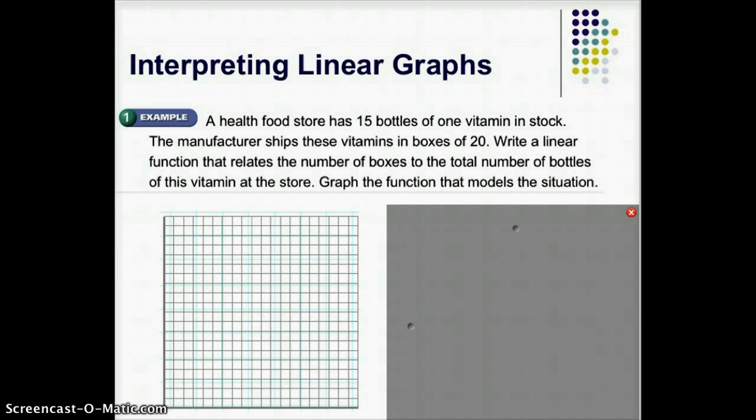But here it is. A health food store has 15 bottles of one vitamin in stock, and then the manufacturer ships these vitamins in boxes of 20. I want you to write a linear function that relates the number of boxes to the total number of bottles of the vitamins at the store, and then graph the function to model the situation.